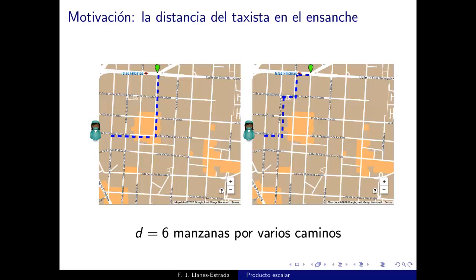El primer ejemplo es muy sencillo: es la distancia que recorre una persona caminando en una malla de calles cuadriculada, como el Ensanche de Madrid o Barcelona. Aquí vemos, por ejemplo, el barrio de Argüelles-Vallehermoso, cerca de la Complutense.